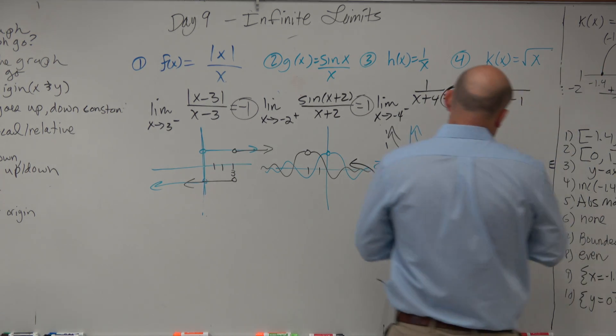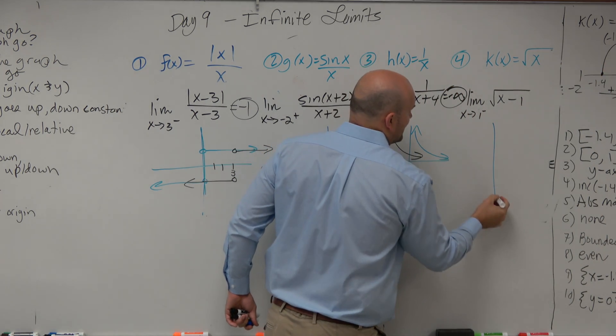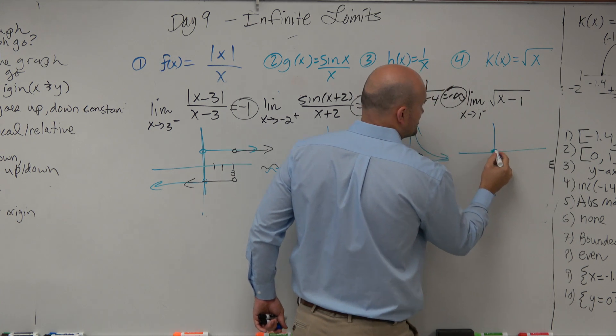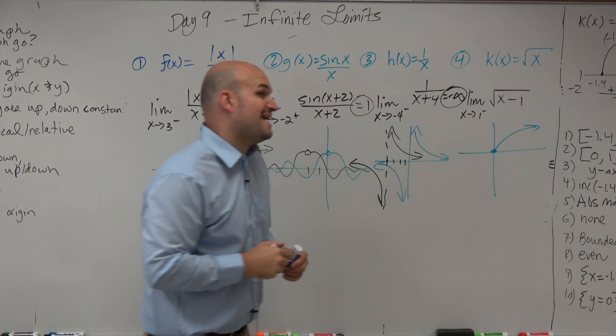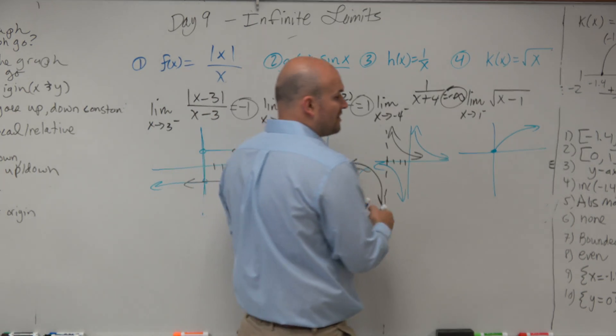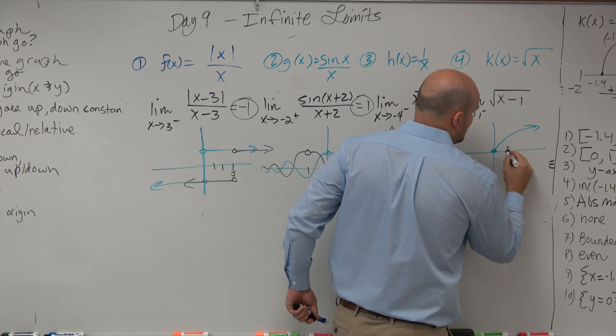And then last but not least is the radical. So when we have the radical function, this looks something like this. But now, we have x minus 1, so that's shifting the graph 1 unit to the right.